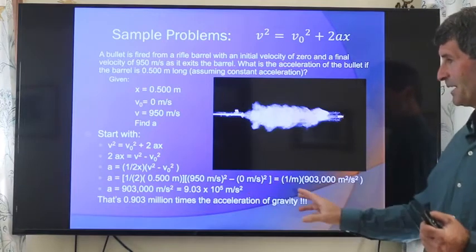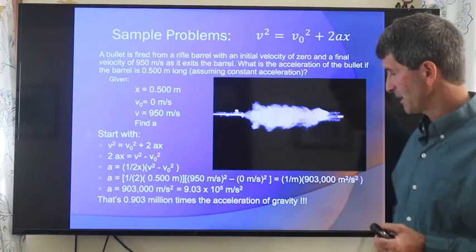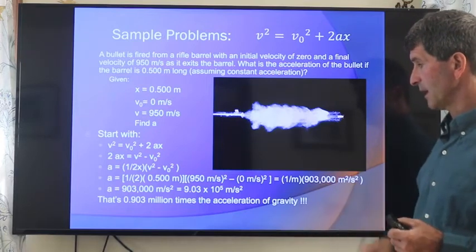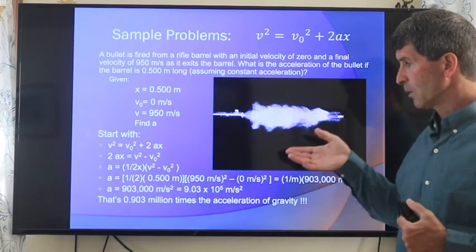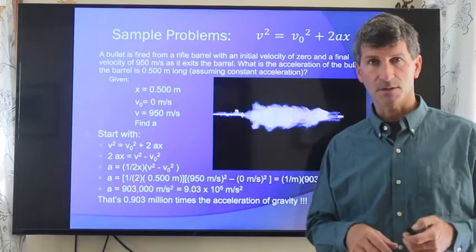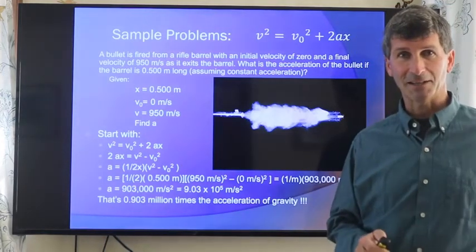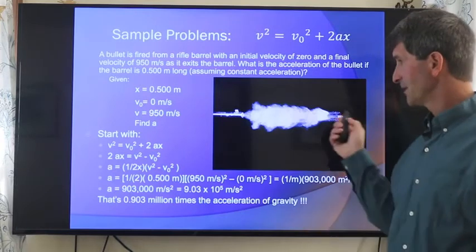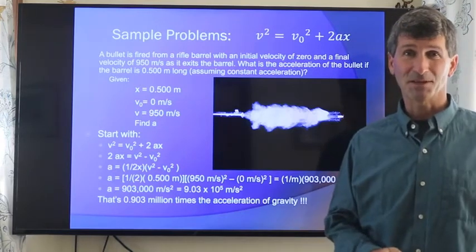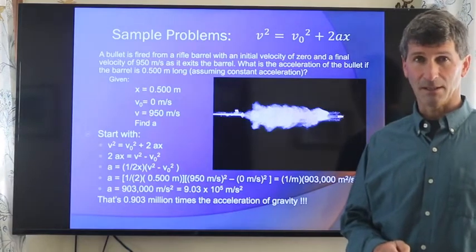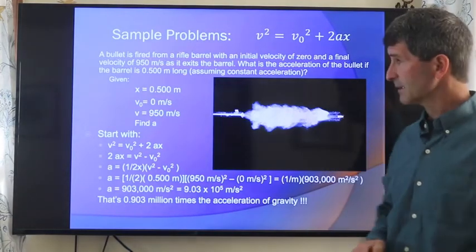Got to be careful here. This is a little bit high for that. It's actually 0.09 million times acceleration of gravity, or about 90,000 g's of acceleration. A person can't survive more than 100 g's. That bullet is experiencing about 1,000 times what a human being can experience without getting killed.